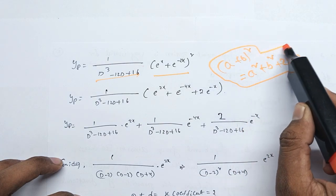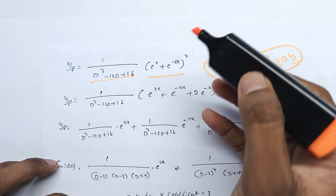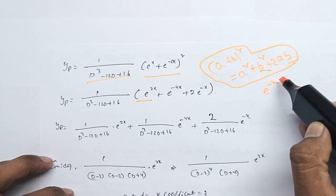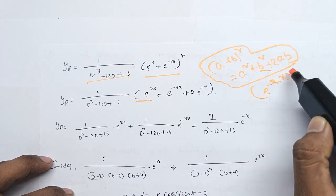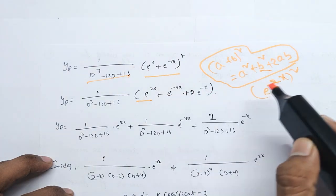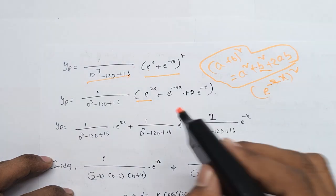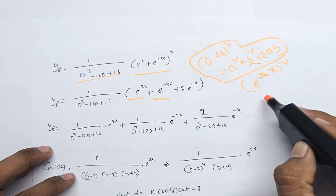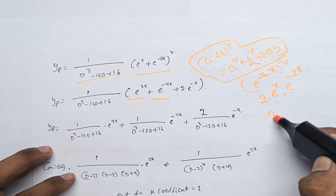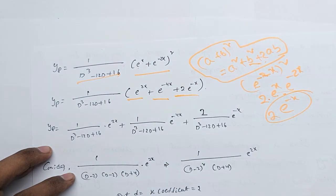A² gives e^(x)² which is e^(2x). B² gives (e^(−2x))² which is e^(−4x). Plus 2 into A, e^(x), and B, e^(−2x), giving e^(−x) or minus 2x into minus x.